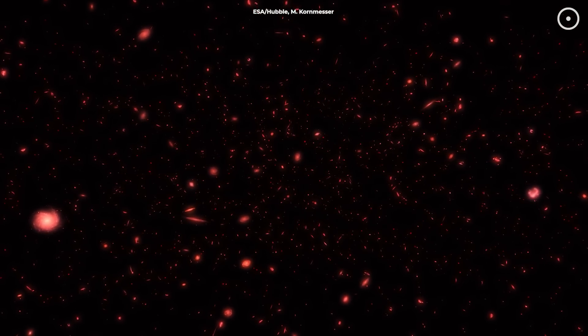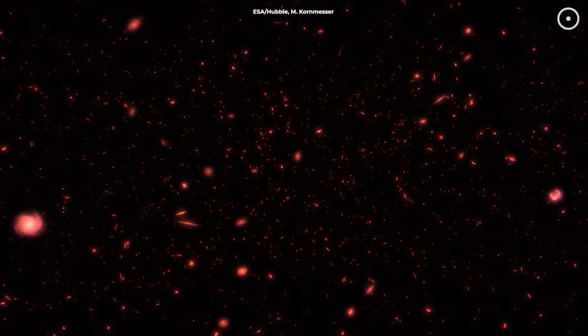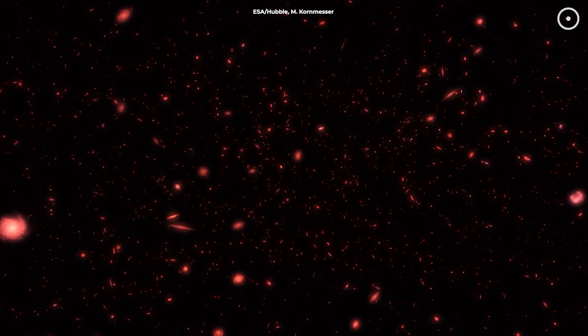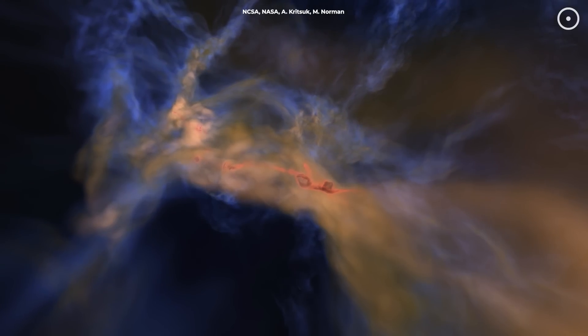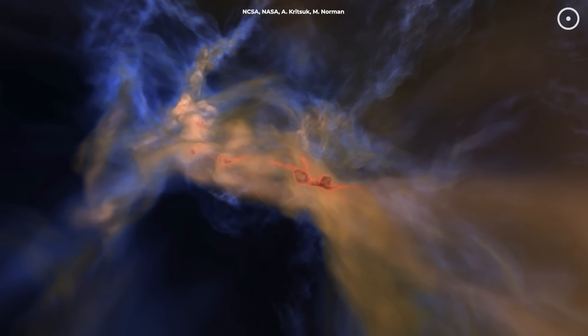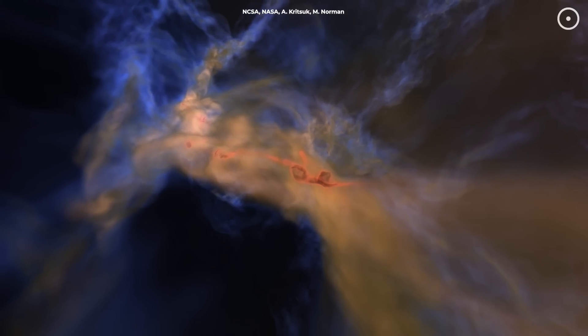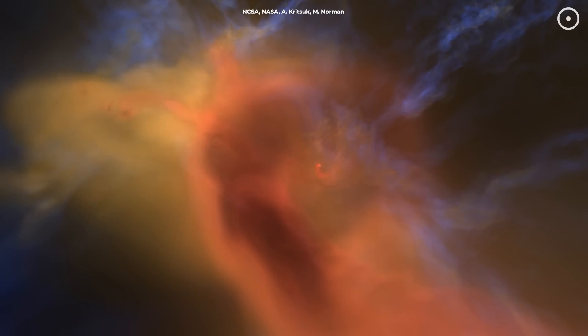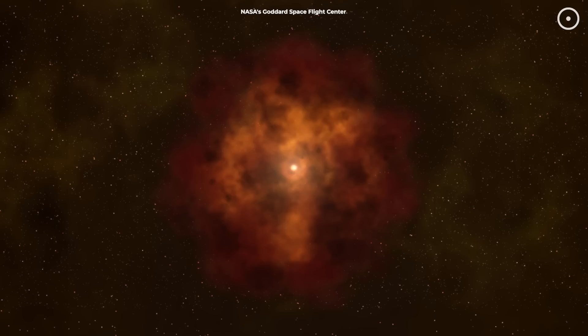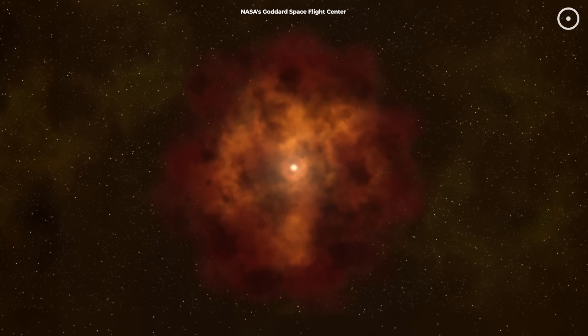The formation of quasi-stars is a fascinating process that takes us back to the very early universe, just a few hundred million years after the Big Bang. Quasi-stars are believed to form when a massive primordial gas cloud collapses under its own gravity. These gas clouds were incredibly dense and had a composition different from what we see in stars today, consisting mostly of hydrogen and helium.